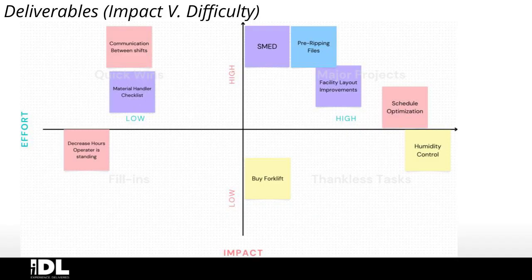We addressed this through four deliverables. Our first deliverable is an impact versus difficulty matrix, which is how we organized our brainstormed solutions to this problem. In purple, you'll see our next three deliverables. In red, you'll see our proposed projects for the company to implement. And in yellow, you will see the projects that are not worth implementing.